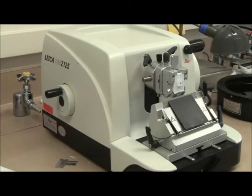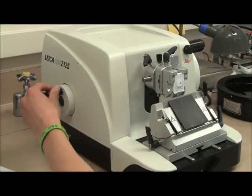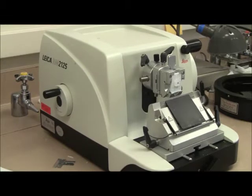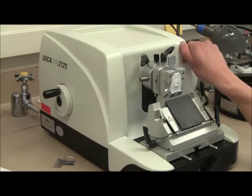This can also be accomplished by using the coarse feed wheel. Set the thickness indicator to 10 micrometers and begin cranking the hand wheel.